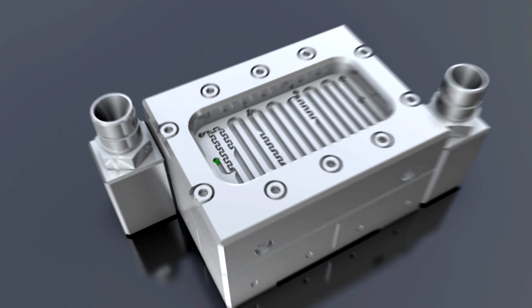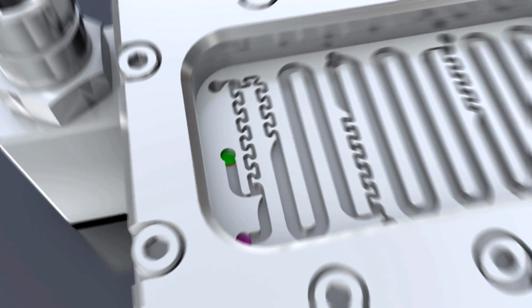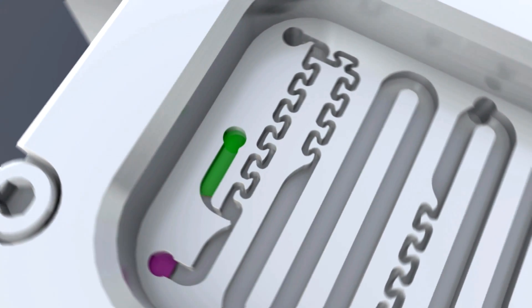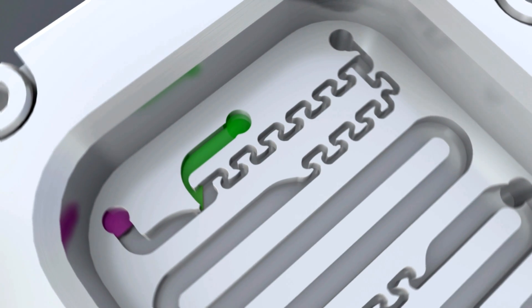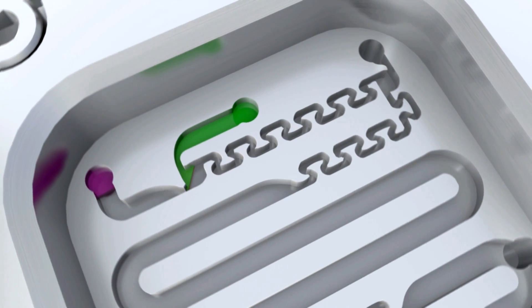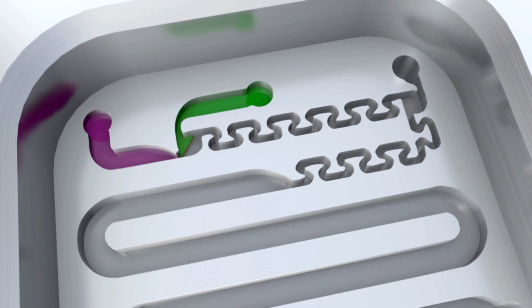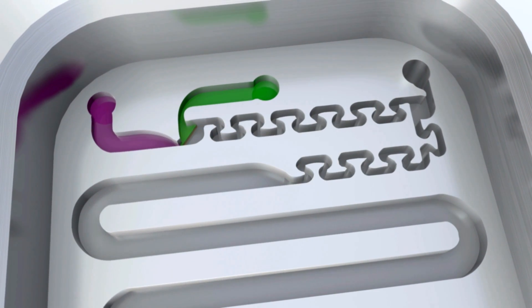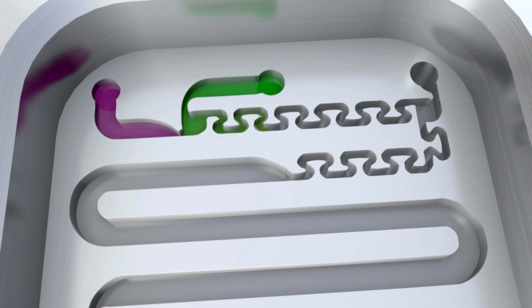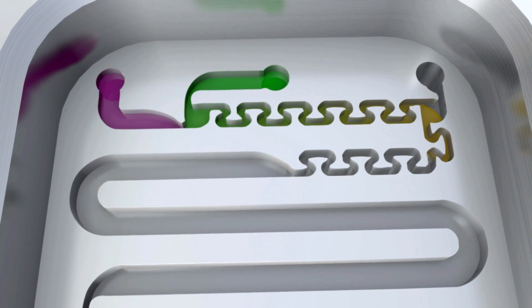The substrate, bromoanisole, flows through the reactor in channels that are only a few millimeters wide. At the same time, the reagent, butylithium, flows into the reactor. Right after the two chemicals are combined, they flow through a meandering structure just a few tenths of a millimeter wide. That leads to a rapid mixing of the two reagents.